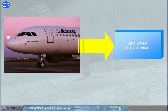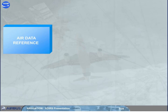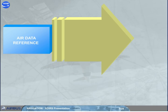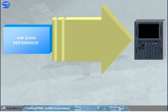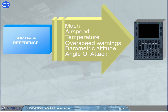The ADR part receives information from aircraft probes and sensors. It provides various items of air data to the Flight Management and Guidance Computers, FMGC, and other users. The air data provided includes Mach, airspeed, temperature, overspeed warnings, barometric altitude, and angle of attack.